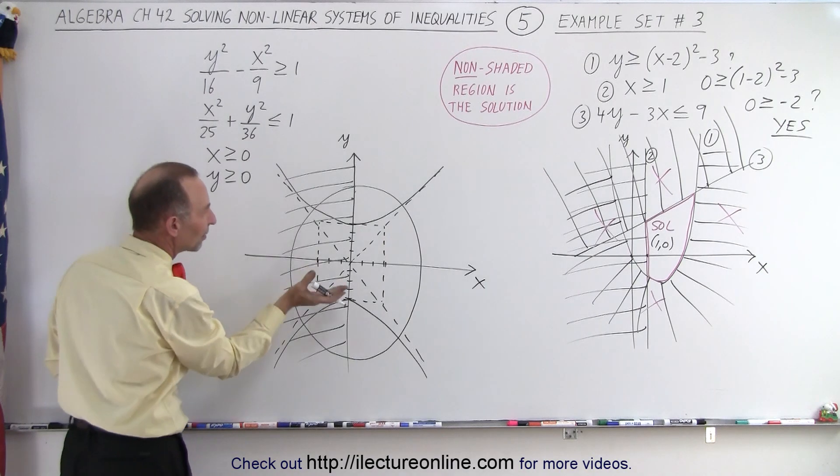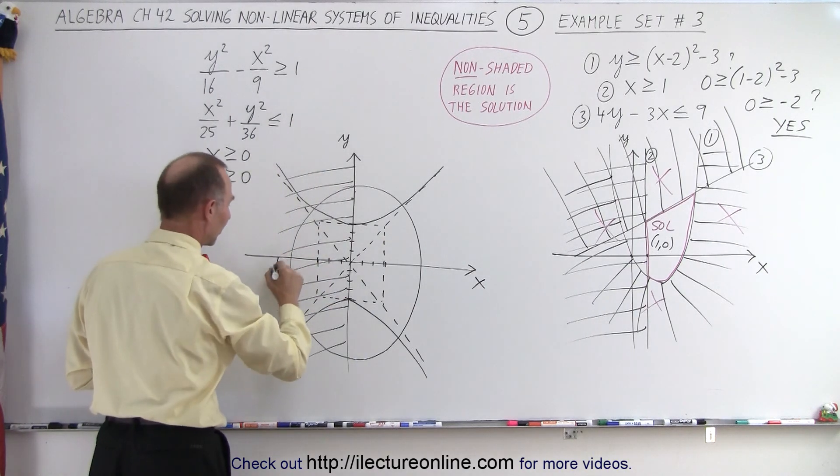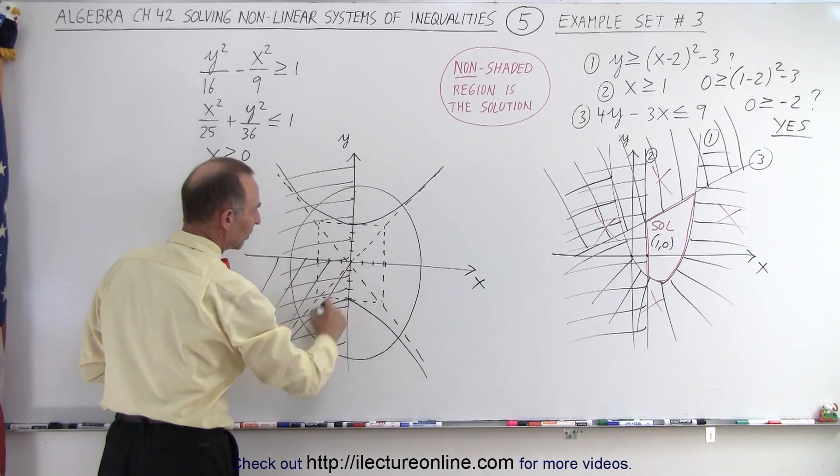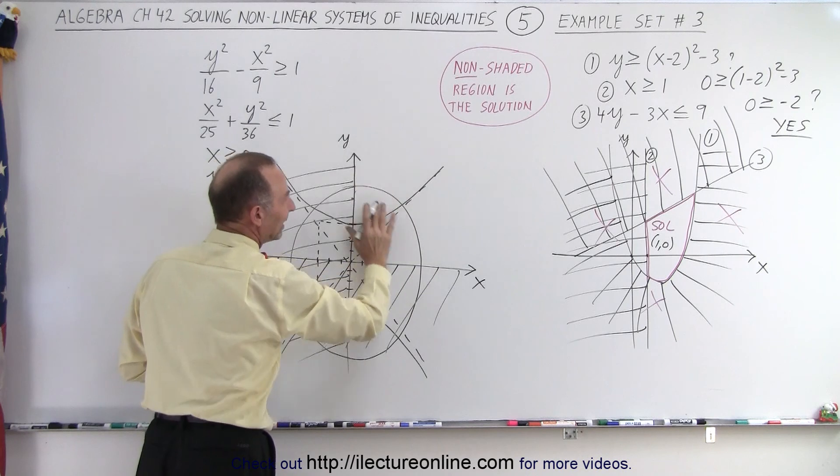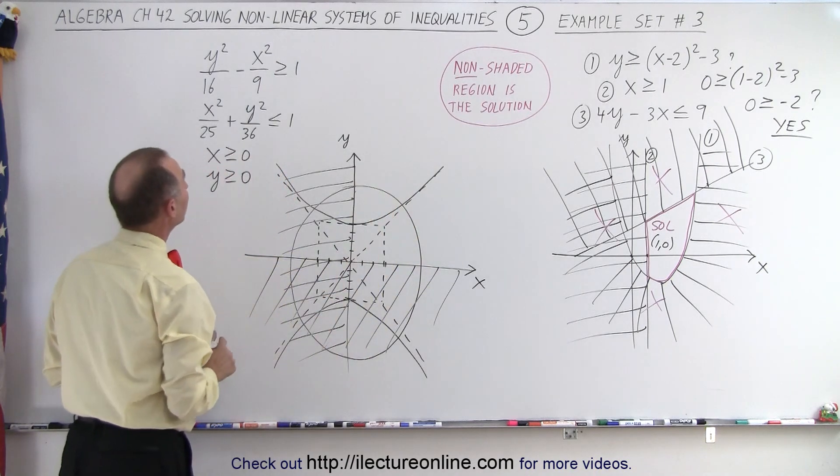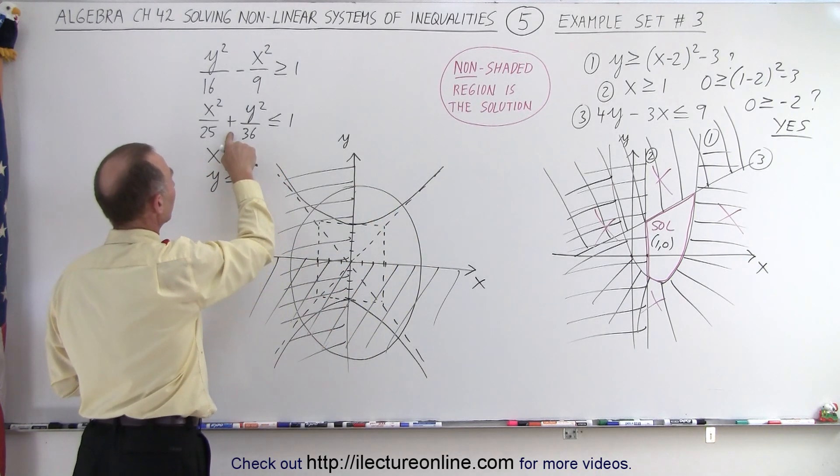Y greater than zero, that means everything above the X axis, so everything below the X axis can be shaded out. Which means the solution can only exist in this quadrant right here.